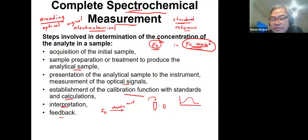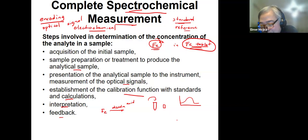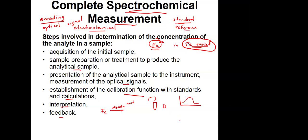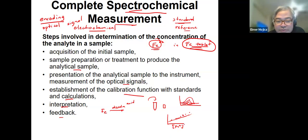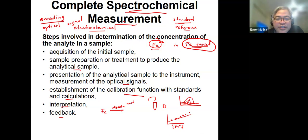Now, how are you going to determine the concentration from the signal? You prepare different concentrations of Fe²⁺ and then you do a calibration curve, and from that you get the reading. You put the reading of your sample there, then interpret and give feedback. Usually, that's how you determine the concentration of the analyte in a sample — but this is using absorption.